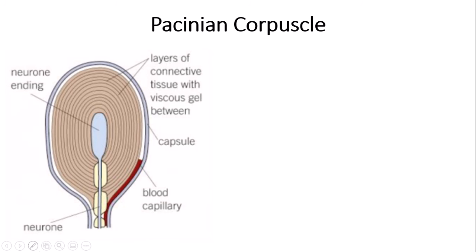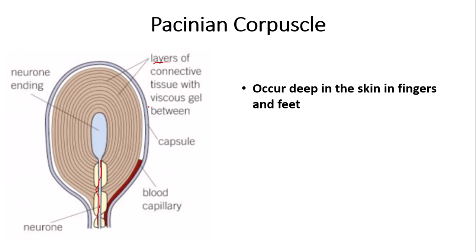Now I'm going to get on to a particular type of receptor called a Pacinian corpuscle. The Pacinian corpuscle has lots of layers of connective tissue. You need to be familiar with the gross structure of a Pacinian corpuscle. It has layers of connective tissue with viscous gel between them, surrounded by a capsule, and the layers of connective tissue surround a sensory neuron — this is a sensory neuron with the nerve ending in the middle. It also has a blood supply via a blood capillary. Pacinian corpuscles are most often situated deep in skin, in fingers and feet.